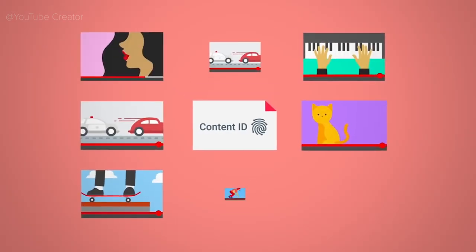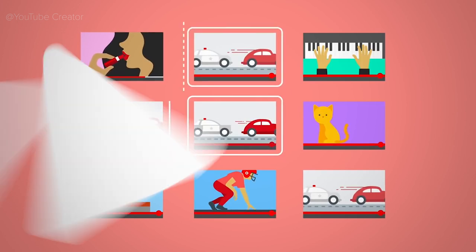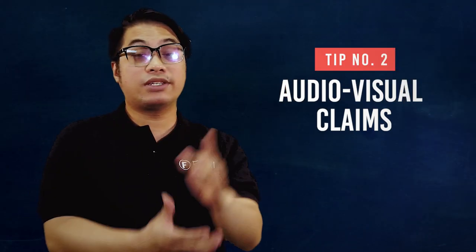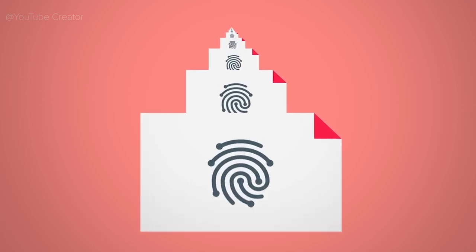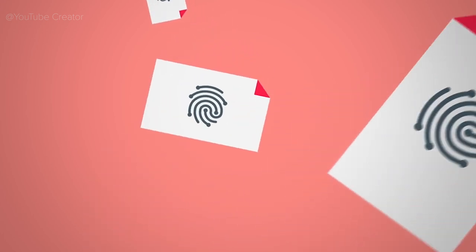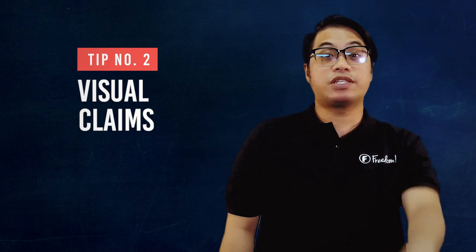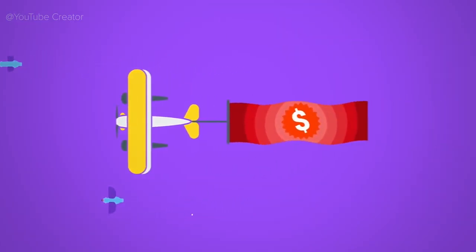So you might be wondering, what kind of claims can your Content ID system do for you? Here are the Content ID claims. Number 1 is audiovisual claims, used to claim audiovisual assets of users who uploaded content from a content creator who is under Content ID. Number 2 is visual claims, used to claim visual video assets of users who uploaded content with Content ID. Number 3 is audio claims, used to claim audio assets of users who upload content with Content ID.